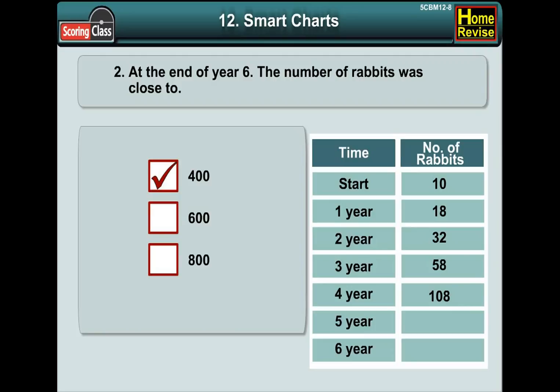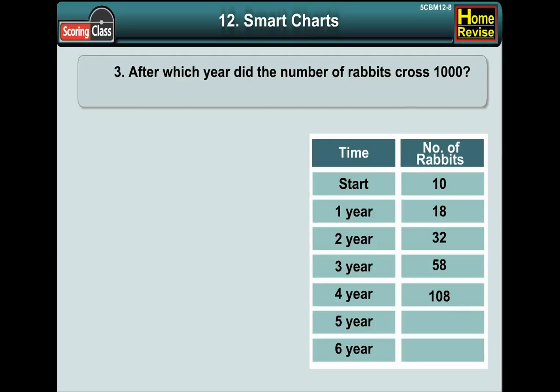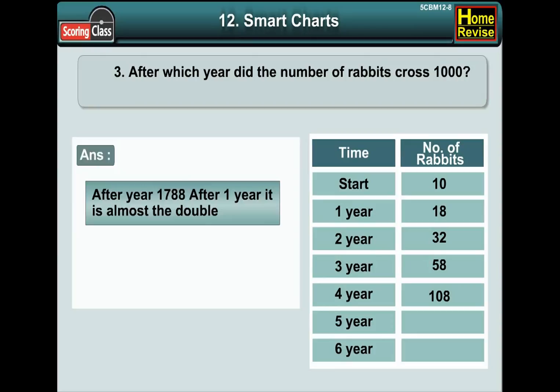Question number 3: After which year did the number of rabbits cross 1000? After year 1788, that is after one year it is almost double.